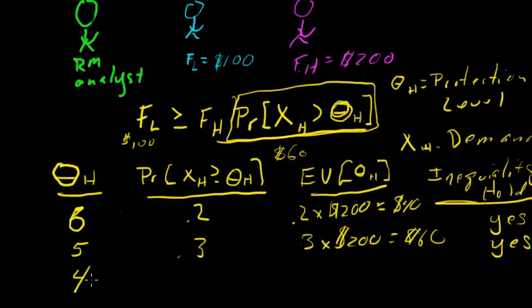Let's continue to lower our theta. In this case, we're going to say that the probability that at least 4 seats being sold in the high fare class is 0.4. The expected value in this case is 0.4 times 200, which equals 80. The inequality still holds.